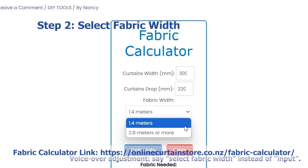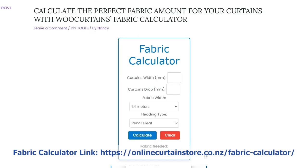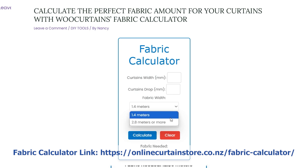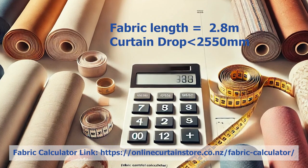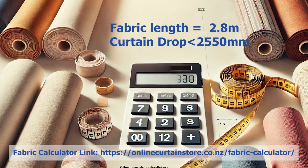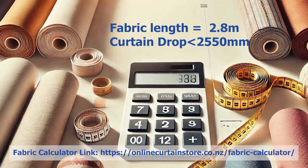Step 2: Select Fabric Width. Next, input your fabric width. Here we have two options: one is 1.4 meters width, known as narrow length; another is over 2.8 meters, known as wide length. If you choose wide length, this calculator only works when your curtain drop is less than the fabric width minus 250 millimeters. For example, if your fabric length is 2.8 meters, the maximum drop of your curtain is 2,550 millimeters.